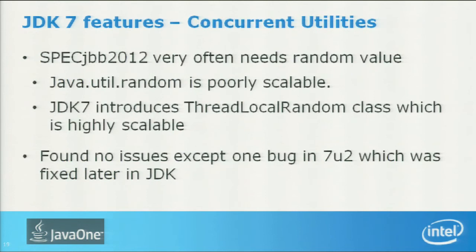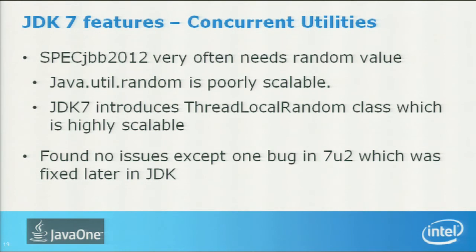Moving to concurrent utilities: the new thread local random feature worked very well. Compared to the old java.util.Random, which didn't scale well, the new one scales really well. There was one bug where it gave the same sequence each time — random numbers but same sequence — which we reported. It is now fixed in update two.